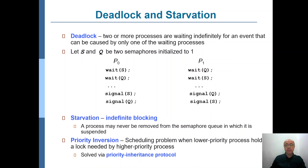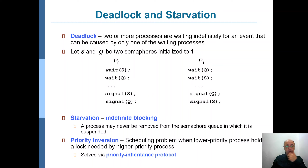Therefore, there will be starvation. For example, consider two semaphores, S and Q. Let's also assume that there are two processes, P0 and P1, that need both of these semaphores.